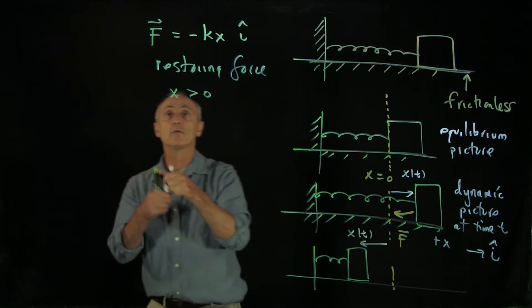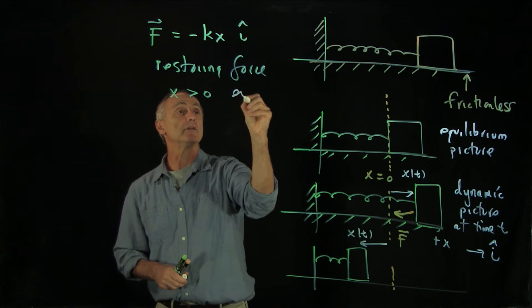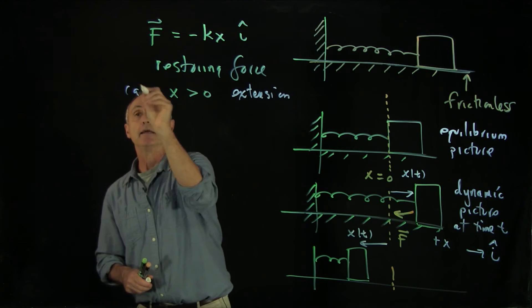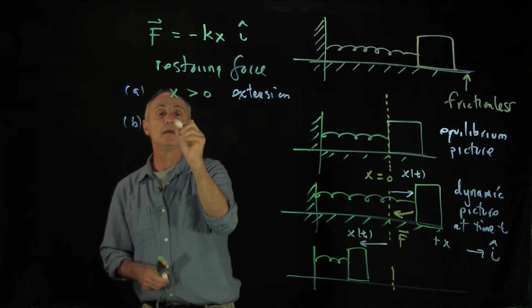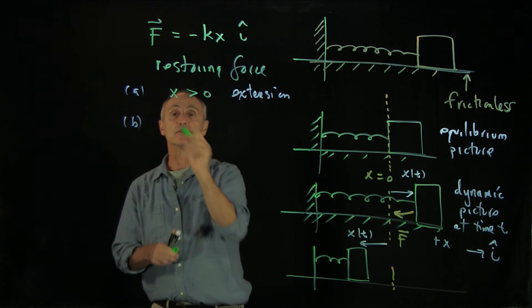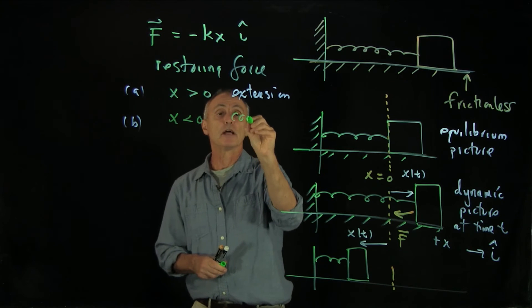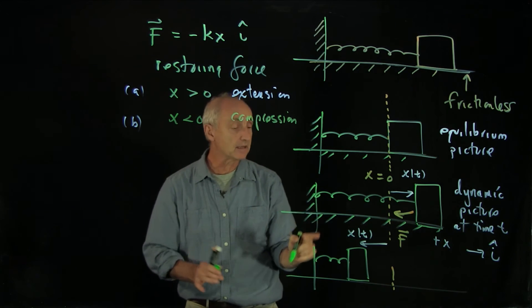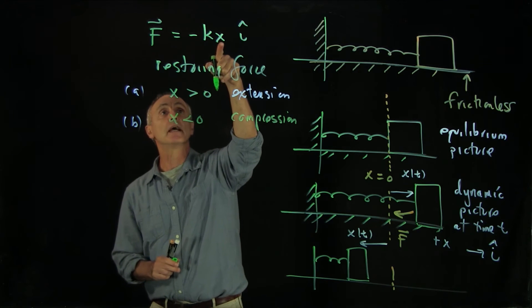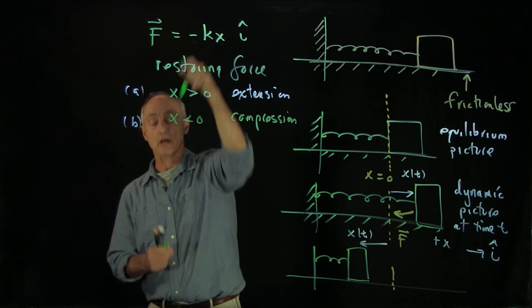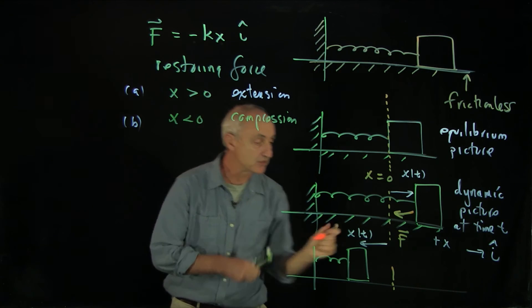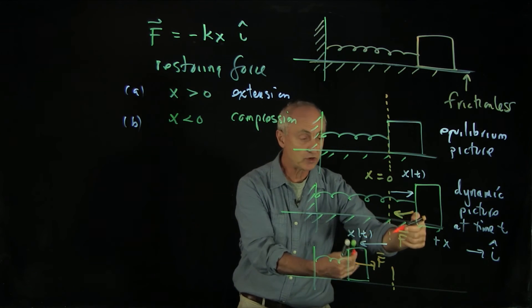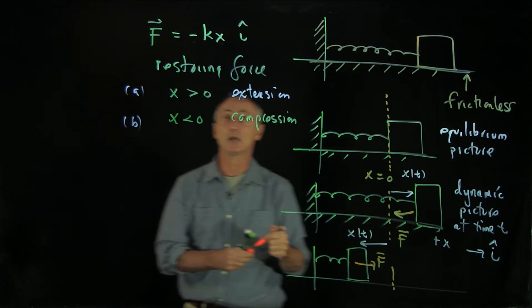So this is extension, we'll call that case a. And case b, when x is less than 0, it's under compression. Then we see that with x negative and the additional minus sign, the force is in the positive direction. So in both instances, the force is a restoring force back to equilibrium.